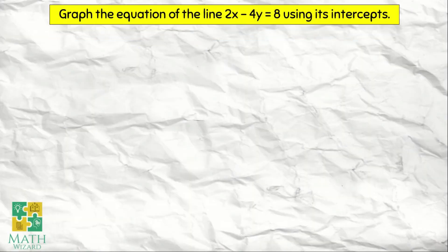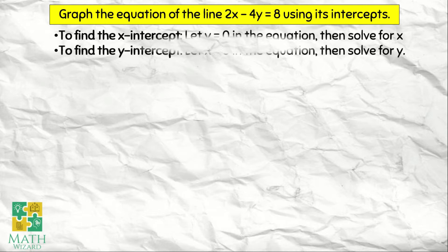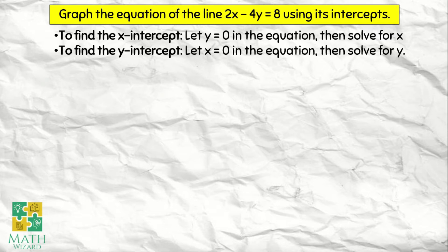First example: graph the equation of the line 2x minus 4y is equal to 8 using its intercepts. The first step is to find the x-intercept and the y-intercept. To find the x-intercept, we let y equal to 0 in the equation and then solve for x. For the y-intercept, we let x equal to 0 in the equation and then solve for y.